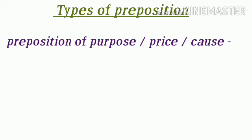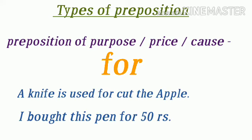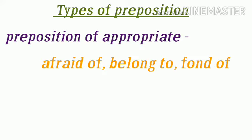Next है preposition of purpose, price, और cause — ऐसे preposition जो किसी उद्देश्य को, किसी कीमत को, या किसी कारण को दर्शाते हैं। यहाँ पे 'for' का use तीनों ही condition में हो सकता है। जैसे: A knife is used for cutting the apple — यह purpose है। And: I bought this pan for 50 rupees — मैंने ये pan 50 रुपये में खरीदी — यहाँ 'for' का use price बताने के लिए हो रहा है।